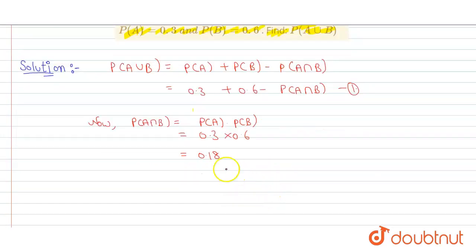Now we will put this in first equation. We will get P(A union B) is equal to 0.3 plus 0.6 minus 0.18, so it is coming out to be 0.9 minus 0.18.